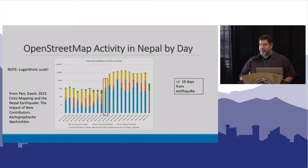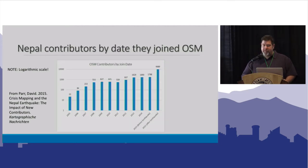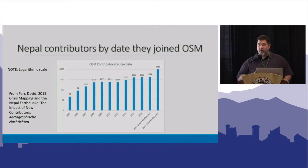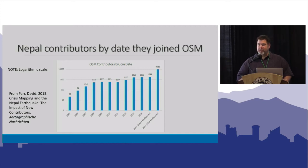So a huge response. Even more impressive: if you take all the people who had added OpenStreetMap data in the previous 10 years of OpenStreetMap back to its inception, there were about a thousand more users who joined after the earthquake in just the 10 days after and started mapping. So there were more people who joined and mapped after the earthquake than there were in the entire previous history of mapping in Nepal.